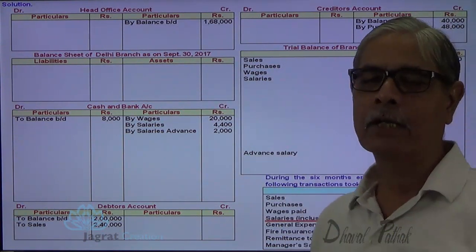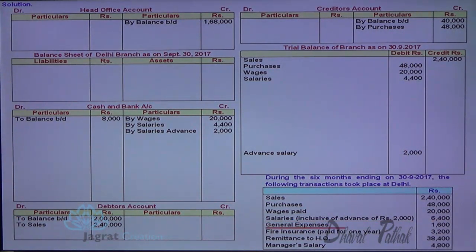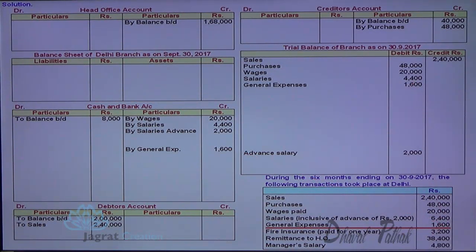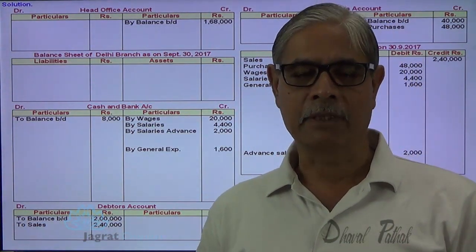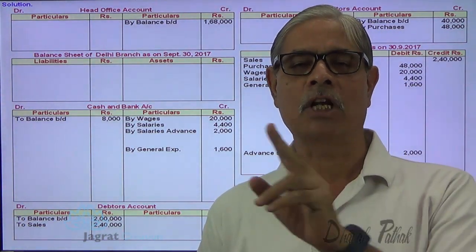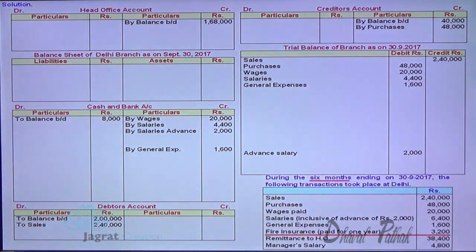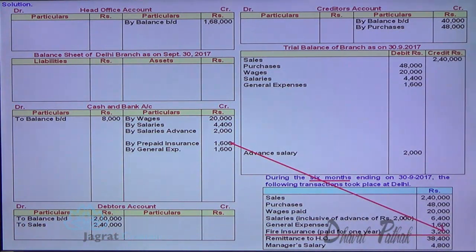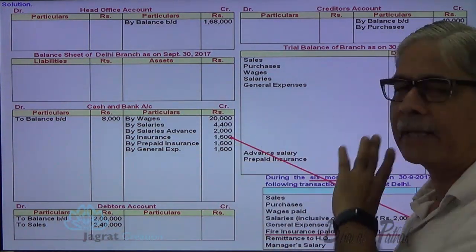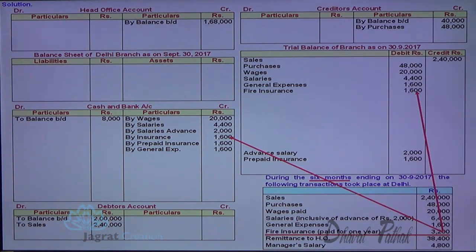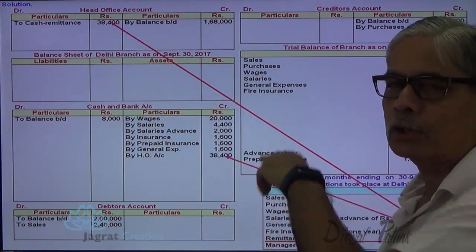General expenses — payment is made, so cash and bank account is credited, and the general expense debit balance is recorded in the trial balance. Fire insurance paid for the whole year is 3,200. Since the accounting period is six months, six months of insurance premium is prepaid. Prepaid insurance will appear in the balance sheet, and cash and bank account is credited. The remaining six months' insurance expense is also recorded, with cash and bank credited, and insurance expense appearing in the trial balance. For remittance to HO, HO account is debited and cash account is credited.